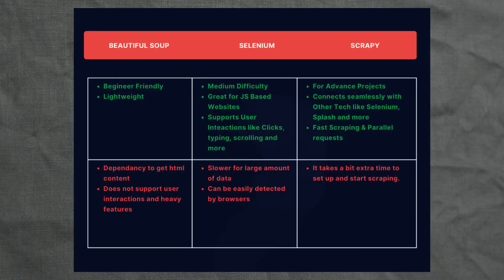Now that we've taken a look at all three technologies, let's see which one you should learn first. If you are just starting out with web scraping, it's recommended that you start with BeautifulSoup first, then Scrapy, and then integrate Selenium into it. This will help you understand how each of the technologies work and their uses. Hope you found this video useful, and see you in the next one.